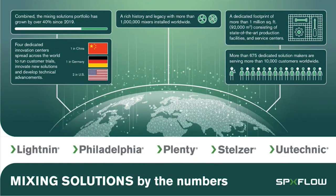SPXflow Mixing Solutions is a global organization — the largest industrial mixing company in the world. We have five different mixing brands under our corporate umbrella: Lightning, Philadelphia, Plenty, Stelzer, and U-Technique. These brands represent a broad range of mixing applications across the process industries including chemicals, minerals and mining, biotech, paints and coatings, nutrition, health, ag, and water treatment. We have four labs around the world where we do fundamental research and targeted customer testing.